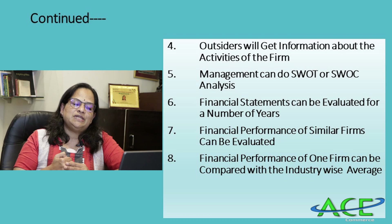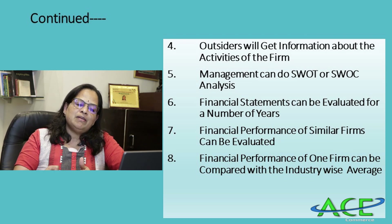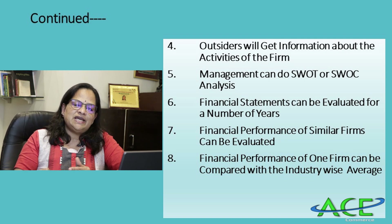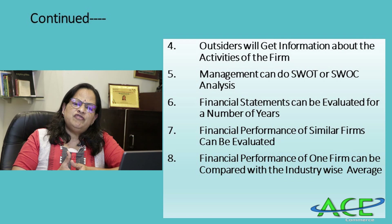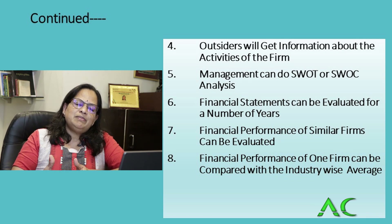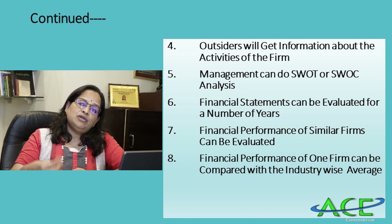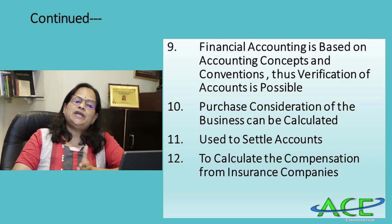Financial performance of one firm can be compared with the industry-wise average. Financial journals publish the industry-wise average for IT companies, cement companies, manufacturers, retailers, and builders. If a firm's performance is close to the industry-wise average, it is good; if it is above the industry-wise average, it is even better.